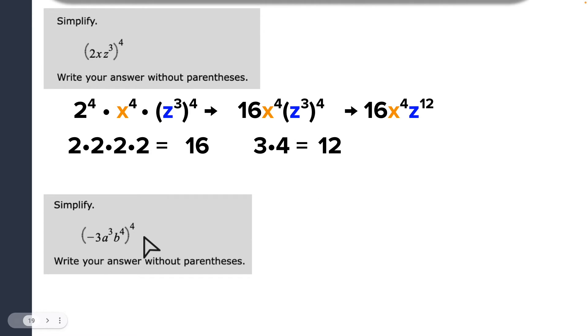So negative 3, a cubed, or a to the third power, and b to the fourth. And then we're doing that four times again by chance we're using the same exponent on these guys. So you can see here, I've not fully expanded it. All I've done is distribute that four to each one of the pieces.